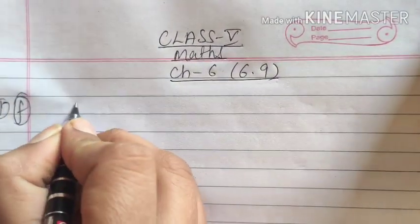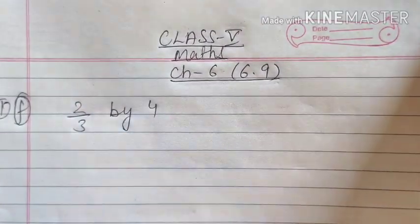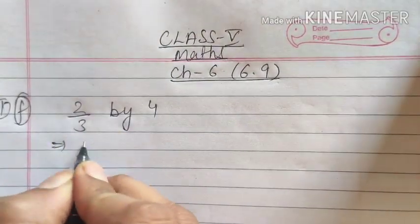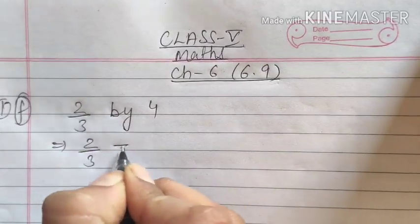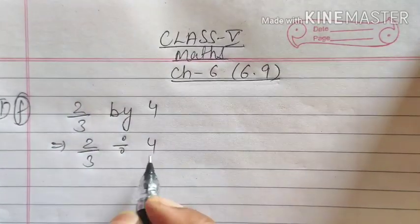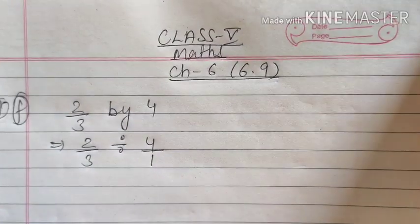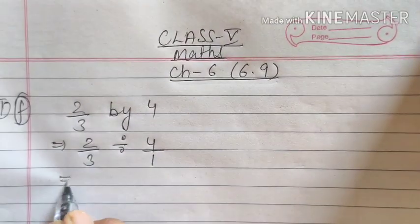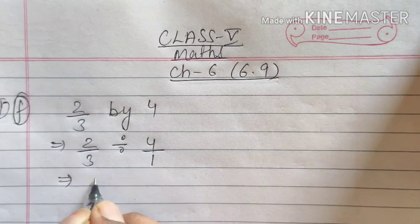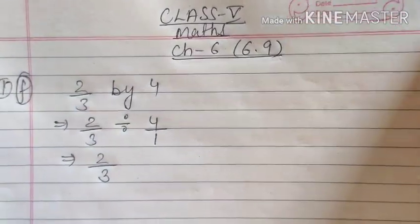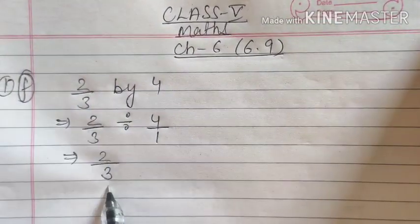That is 2 by 3 by 4. This is our question. First of all, 2 by 3. By means divided and 4 means 4. But below 4, we don't have anything. So we have kept here 1. However, for solving this division, left hand side of the division will be kept as it is. So here it was 2 by 3. So I kept here 2 by 3.